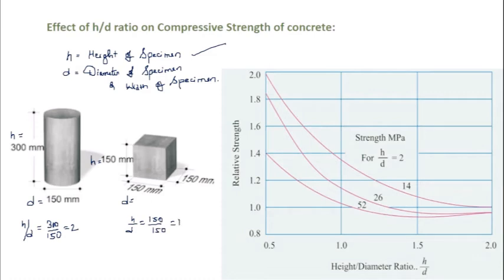Normally, height of the cylinder h is made twice the diameter d as we see here. But sometimes, particularly when the core is cut from the road pavements or airfield pavements or foundations concrete, it is not possible to keep the height by diameter ratio 2 is to 1. That is for example, if you take a road here, this is the thickness of the concrete road.